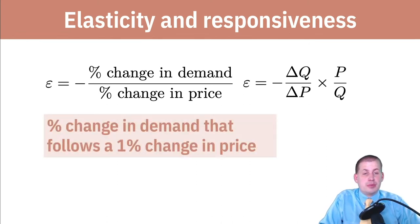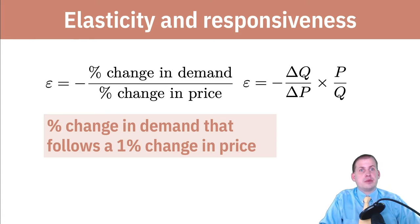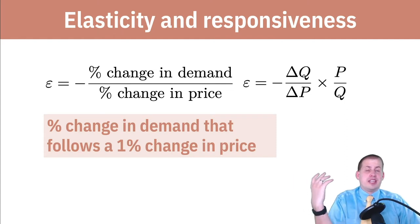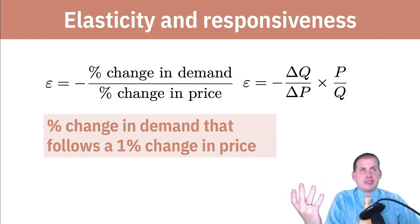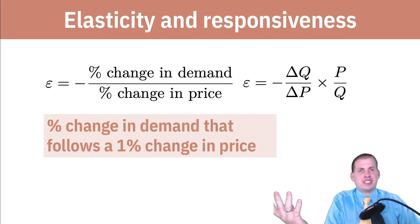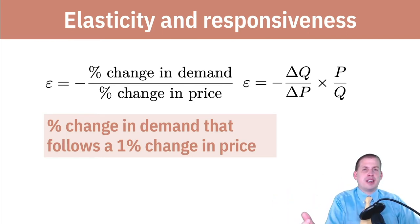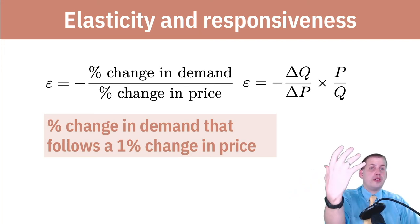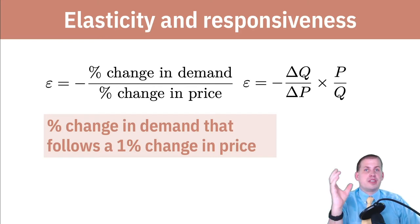The way you interpret this: it's the percent change in demand that follows a 1% change in price. Because it's hard to think about a 1% change — if something costs $3 and goes up by 1%, it goes from $3 to $3.03, and not many people are going to stop buying something because it changes by $0.03. So I like to multiply by 10: if the price changes by 10%, how much does demand change? So if something that's $3 goes to $3.30, more people are going to jump away, and it's going to be more visible and interpretable.